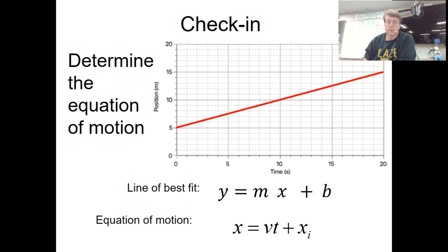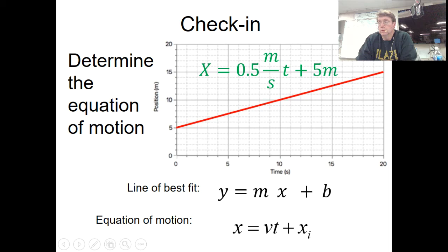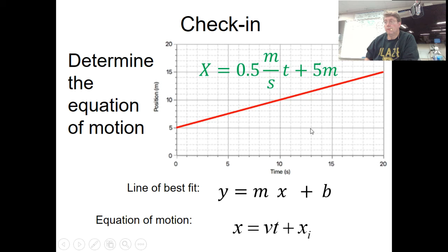I'd like you to figure out the equation of motion for this particular graph. Use the idea of a line, but convert the parts into the equation of motion — replace m with the slope you can calculate and replace b with the y-intercept you can read off the graph. You should get x = 0.5 meters per second times t plus a beginning position of 5 meters at t = 0.